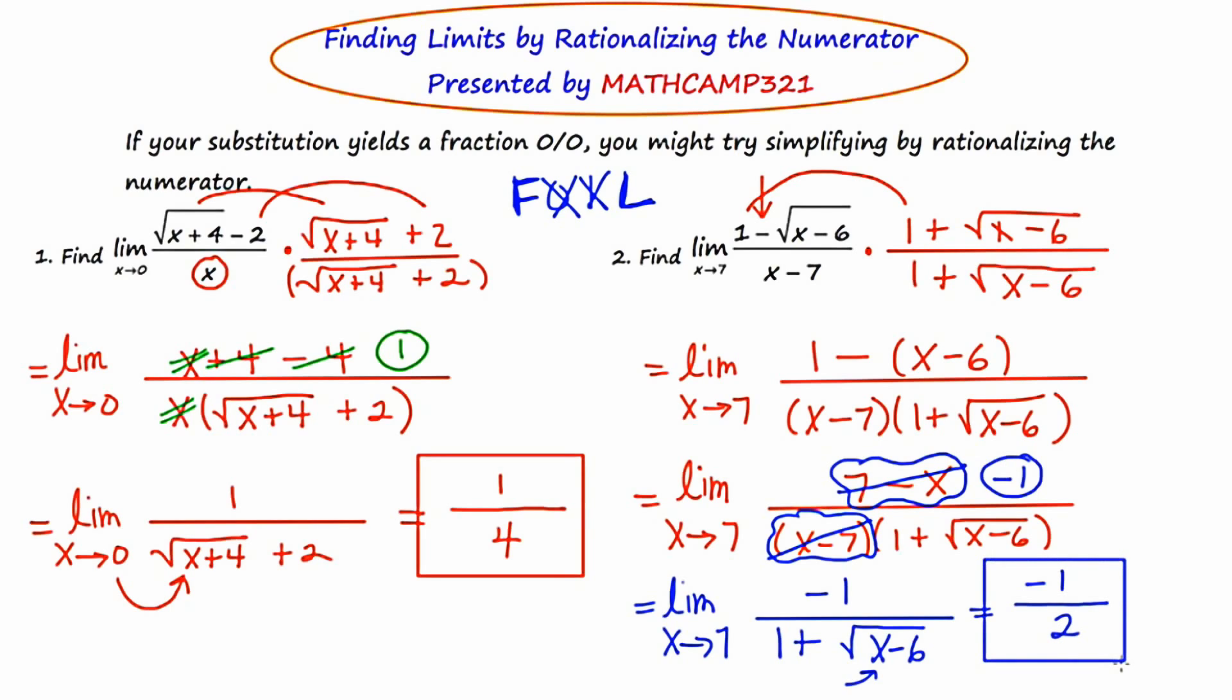So your first line of defense in really doing any limit problem is to try to plug in the number of the value in the limit. If you get an answer, great, you're done. But if you get this fraction zero over zero, it means you need to try something else. And the things that we've talked about are factoring in hopes that factors, common factors cancel out. We've talked about simplifying the complex fraction. And in this video, we talked about rationalizing the numerator. So you're developing some techniques and strategies for dealing with that situation.